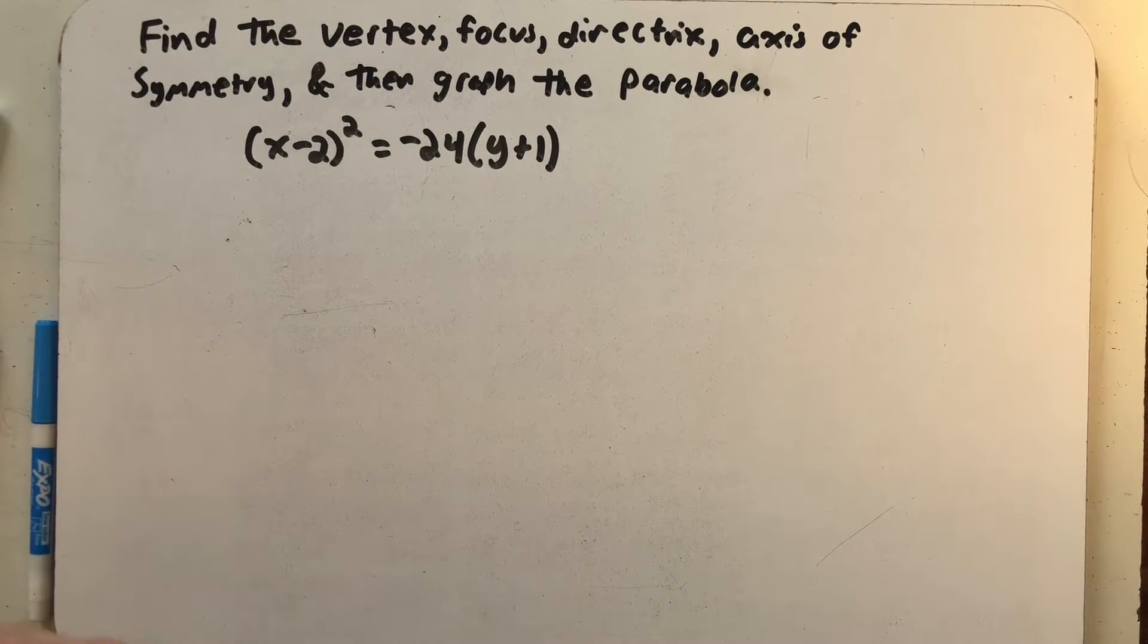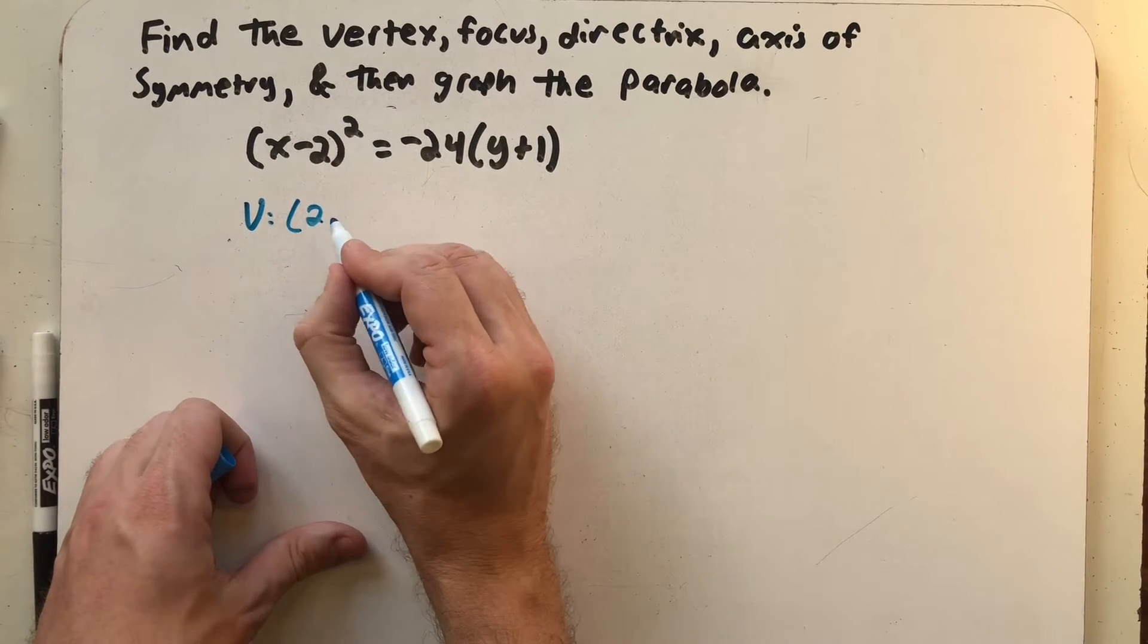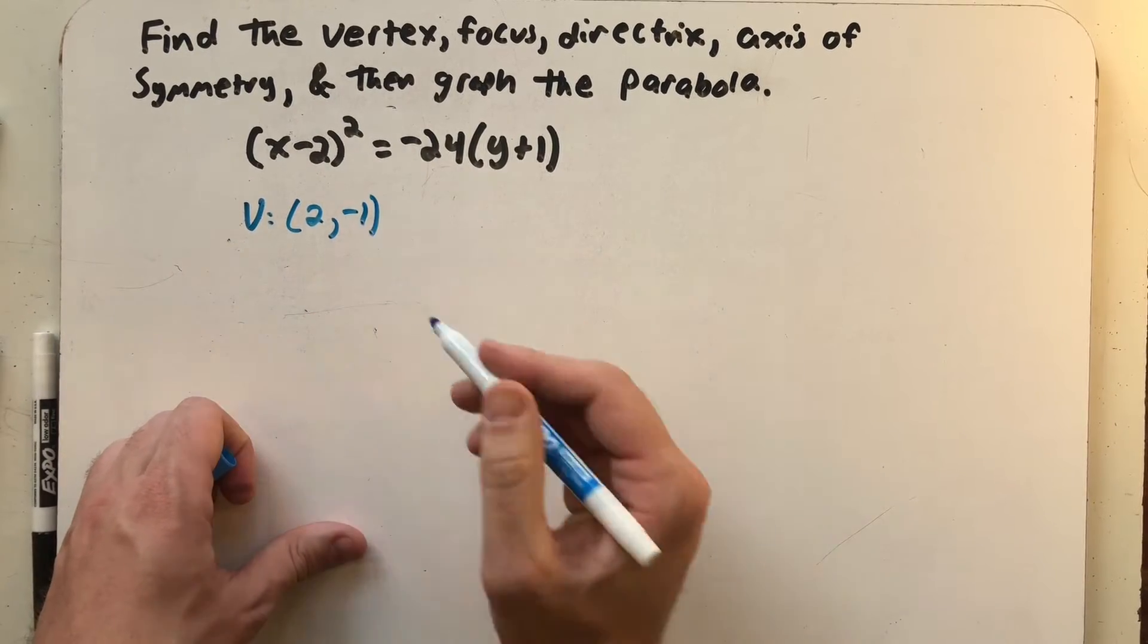What I observe right away is that this is the equation of a parabola where the vertex is not at the origin. This vertex would be at (2, -1).